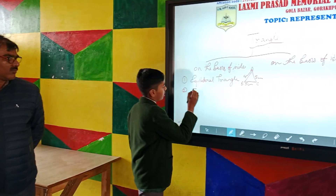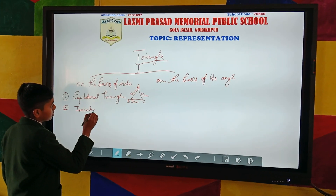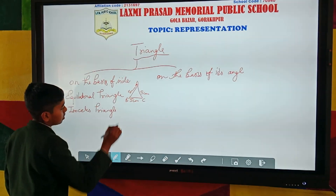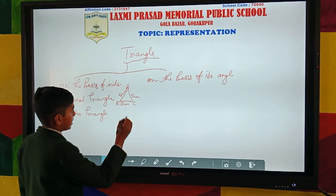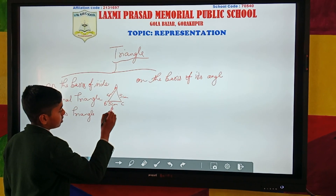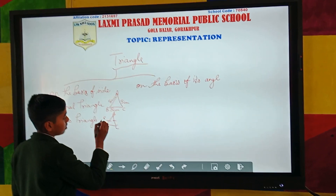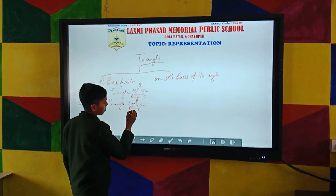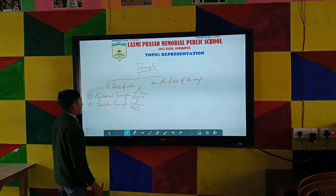Second one is isosceles triangle. A triangle in which two sides are equal is known as isosceles triangle. For example, this one is the example of isosceles triangle.